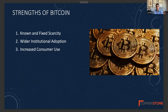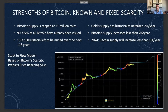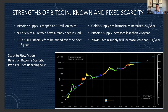One of the greatest strengths of Bitcoin is its known and fixed scarcity. There will only be 21 million Bitcoin ever produced. We've already issued over 90% of them, and the remainder will be issued over the next 118 years.